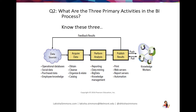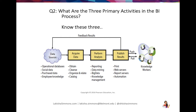Let's get into the primary activities in business intelligence. Now that we know some of the great outcomes, what is the process? You must begin with data sources — you can use databases, social media, purchased data, reports, notes, call center notes, and call center voice activity. We acquire the data from those sources, then we must clean it, organize it, and catalog it. Then we can perform analysis: create reports, do data mining, and summaries such as what were our sales last month or last year.